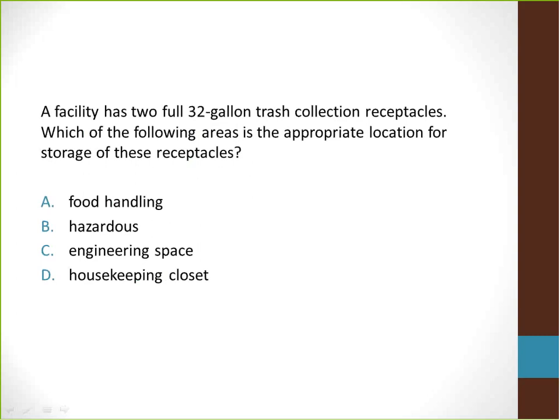A facility has two full 32-gallon trash collection receptacles. Which of the following areas is the appropriate location for storage of these receptacles? A, food handling; B, hazardous; C, engineering space; D, housekeeping closet. Answer B is the best answer here because according to NFPA 101, a facility may exceed the 32-gallon limit in a hazardous area.